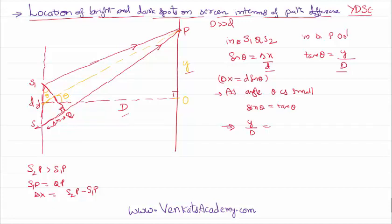That implies y on the screen, where I am going to get a bright or dark spot, is delta x times capital D divided by small d. This is the relation between y, capital D, small d, and delta x. Basing on this relation, further in the next video lesson...